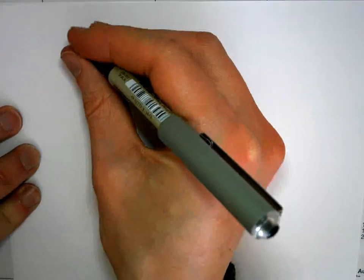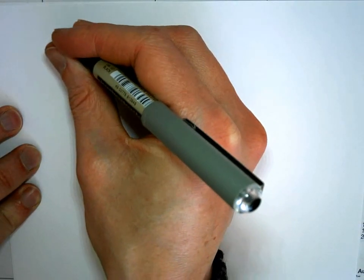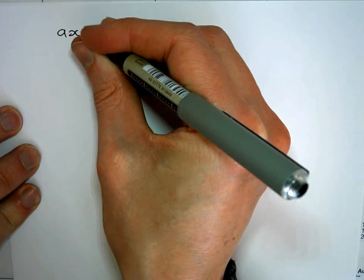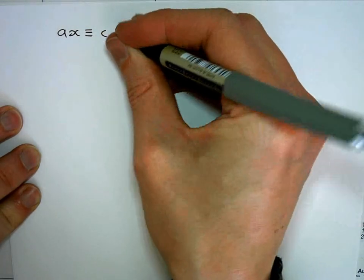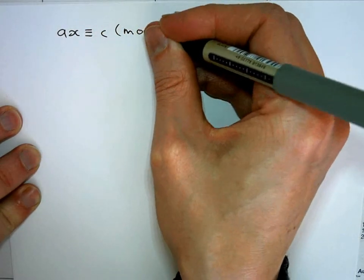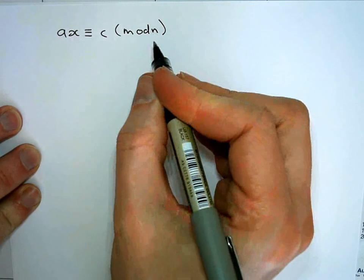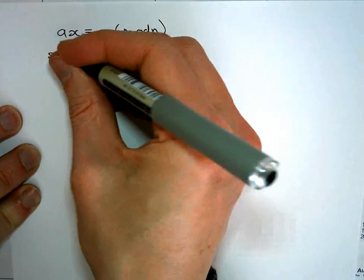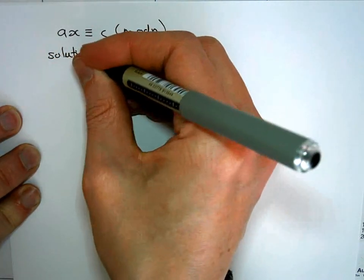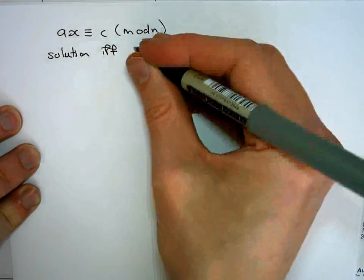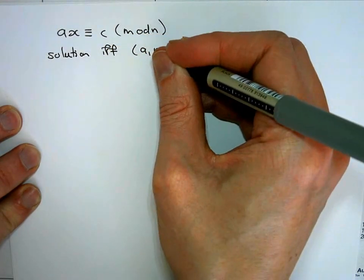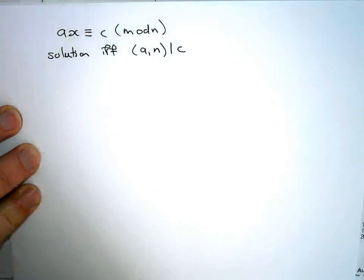So firstly, let's recall a few basic facts from number theory that we will use in these systems. The first fact relates to the solution of linear congruences. Recall that a linear congruence of this form, Ax congruent to C mod n, has a solution if and only if the GCD of A and N is a divisor of C.